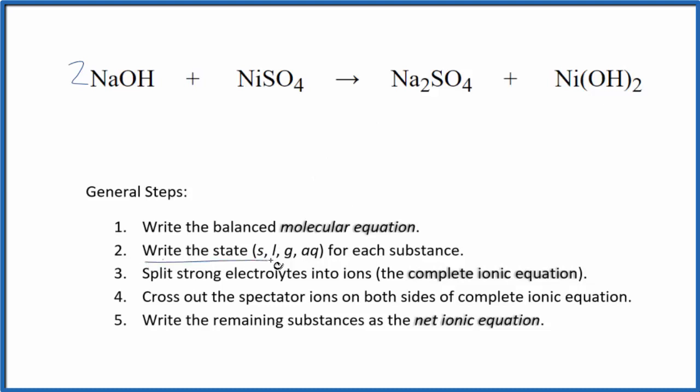Now we can write the states for each substance. Sodium hydroxide is a strong base, strong electrolyte. That's going to dissociate into its ions. We write aq. For nickel sulfate, sulfates are usually soluble, so we're going to write aq there. And then sodium compounds, very soluble, aq.